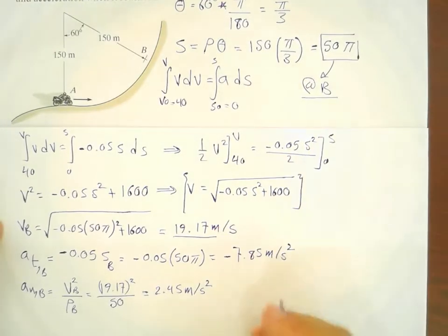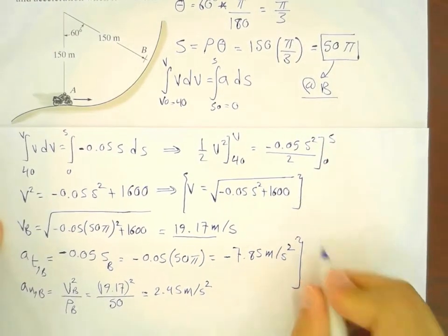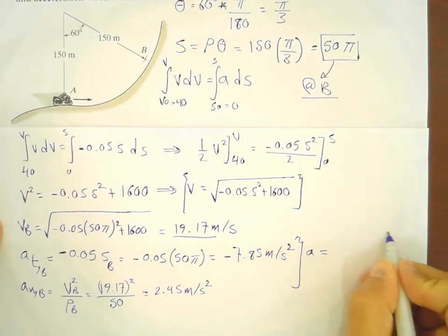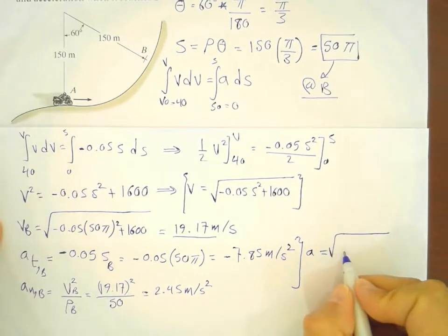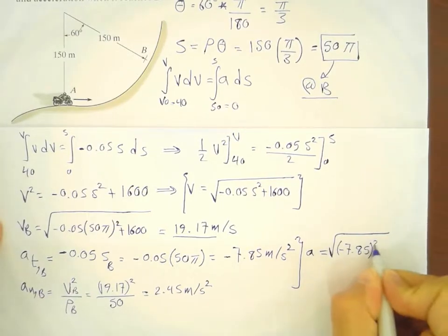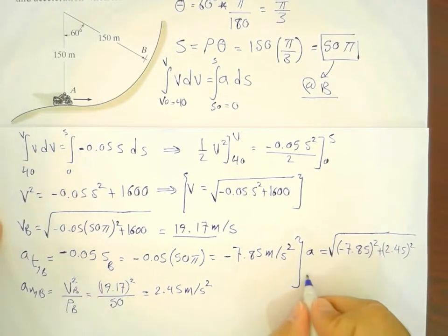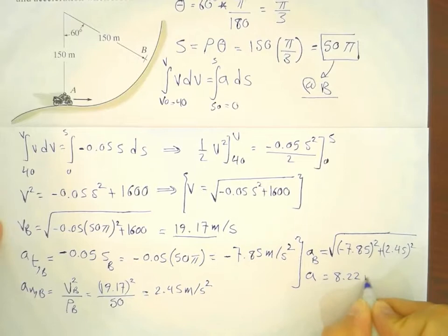Now, from these two values, we can get the magnitude of the acceleration at point B. And we say minus 7.85 squared plus 2.45 squared. And the acceleration at point B would be equal to 8.22 meters per second squared at point B.